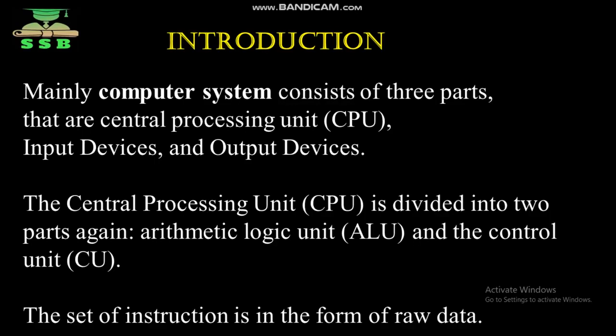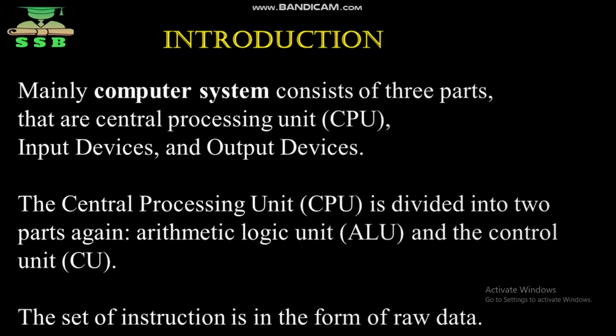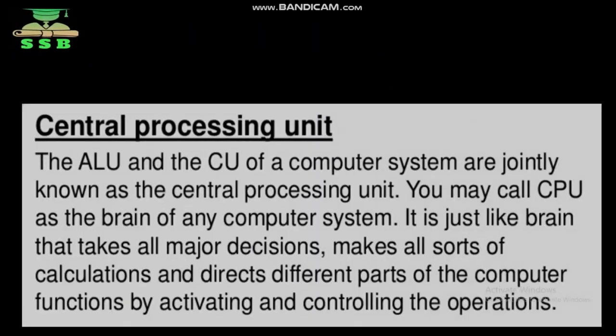For example, as I am speaking, my mind generates instructions to produce sound, control my system, my hands, my tongue — many such operations are simultaneously performed. This is what we call the Central Processing Unit. The main components coming under it are ALU and CU.